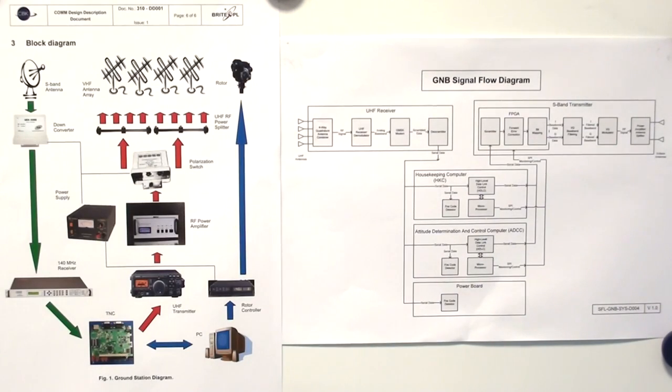System komunikacji składa się z segmentu naziemnego, zwanego stacja naziemna oraz segmentu kosmicznego, czyli satelity, na którym mamy system komunikacji oraz komputer pokładowy.